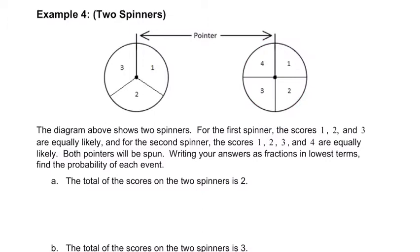They're telling us that the 1, 2, and 3 are equally likely on the first spinner, and the 1, 2, 3, 4 are equally likely on the second. We want to look at the following probability of each event.